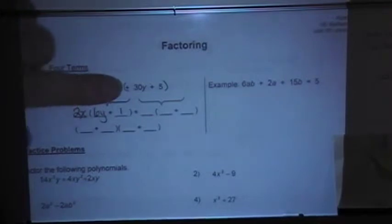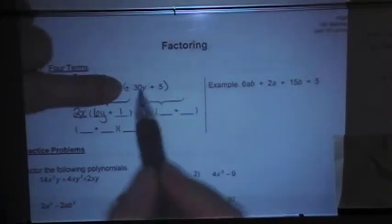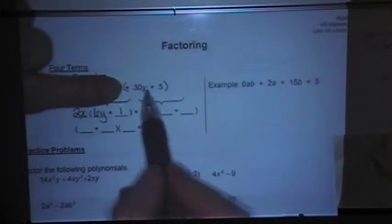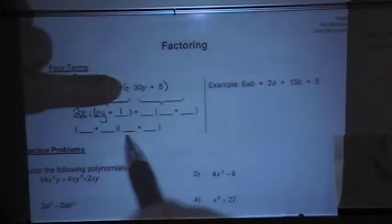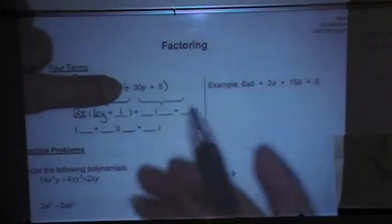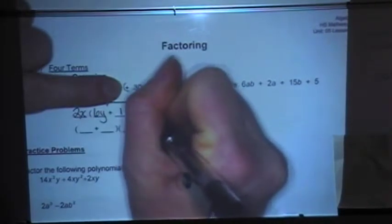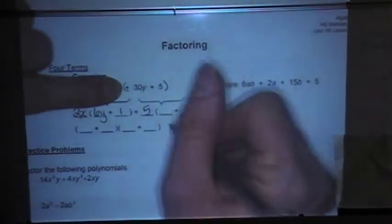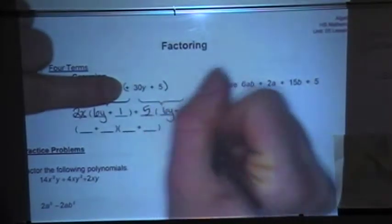Now, I'm going to do the same thing for this binomial. I'm going to factor out a GCF between these two things. Now, they're both positive, so it's going to be a positive. And they both can be divided evenly by 5, so that's your GCF. That would leave me 6y plus 1.